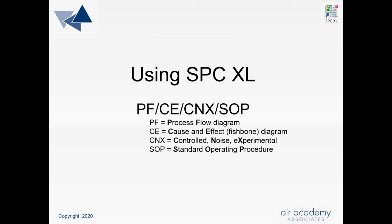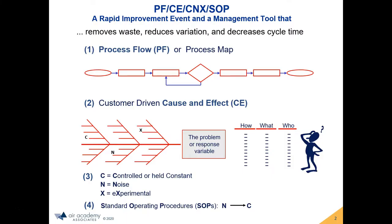Working together, they form what we call the first line of defense against variation. If used properly and consistently, they combine to reduce the cost of waste and the cost of poor quality. PFCE CNX SOP can be considered a rapid improvement event that managers can use to reduce variation, remove waste, and reduce cycle time.